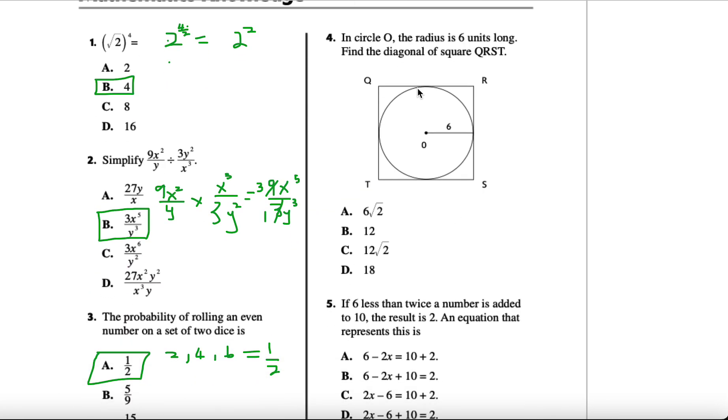Number 4 says in circle O, the radius is 6 units long. Find the diagonal of square QRST. We know that the radius is 6. If the radius is 6, then we can say this is 6, this is 6, and the same for this being 6 and this being 6. So really the sides are 12, and to find the diagonal we can use Pythagorean Theorem.